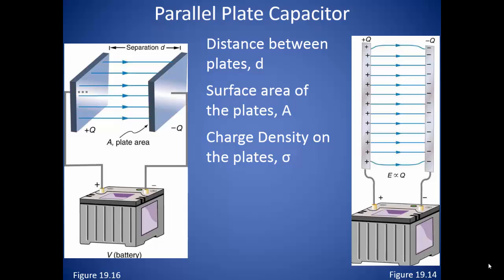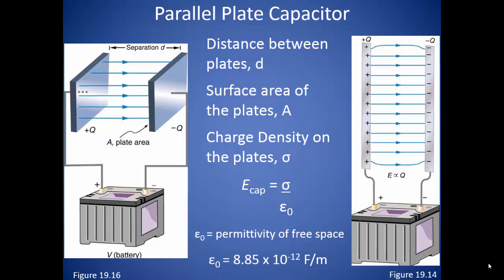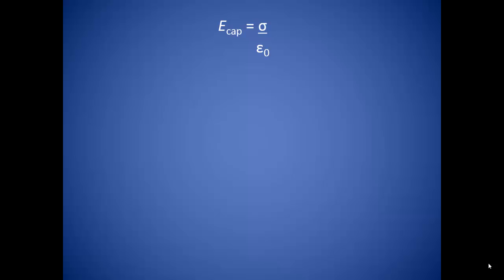Say we charge each capacitor so that they have the same number of charges. Since the first capacitor has a smaller area than the second capacitor, the density of the charges will be higher. The size of the electric field inside a capacitor depends on this charge density and the permittivity of free space constant. This constant is basically a measure of how much the molecules in between the plates oppose the electric field. Since it is called the permittivity of free space, we are assuming there is only air in between the plates when we use it. We define charge density as the amount of charge divided by the area of the plates.